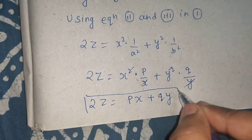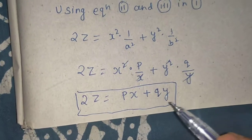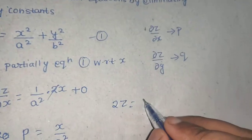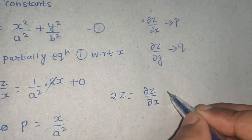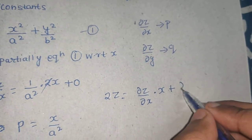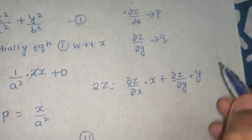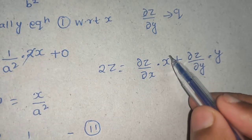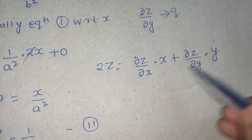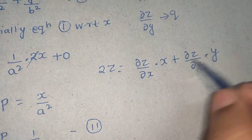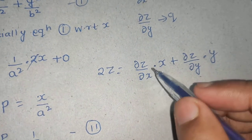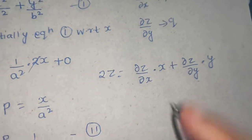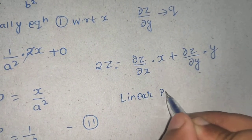For those who don't want to use p and q, we can back-replace: 2z equals (del z by del x) multiplied by x, plus (del z by del y) multiplied by y. Now, is this a linear or non-linear partial differential equation? We have no problem with x and y being multiplied by del z by del x and del z by del y, because x and y are independent variables. So this is a linear partial differential equation.